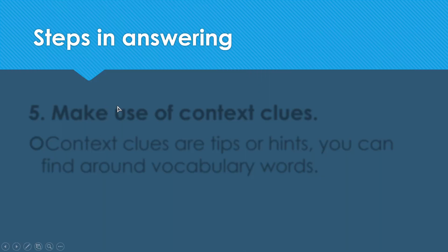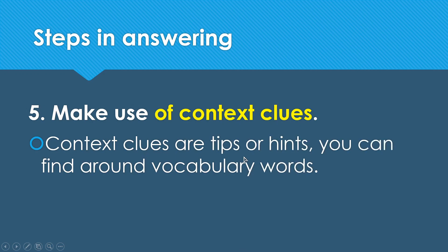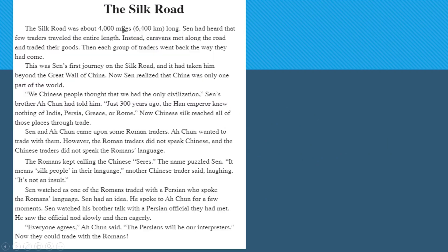Step five: make use of context clues. Context clues are tips or hints you can find around vocabulary words. There will be many words you don't understand in a passage, but you can understand them by reading the sentence around that vocabulary word. Understanding the meaning of vocabulary words will help you answer unseen comprehension activities.